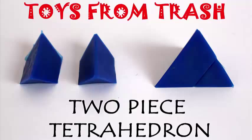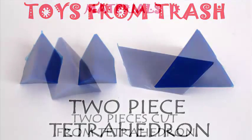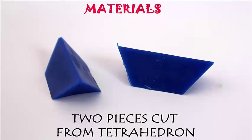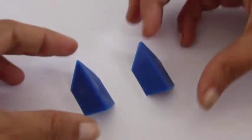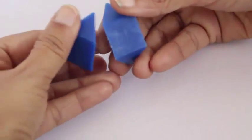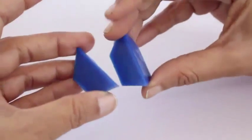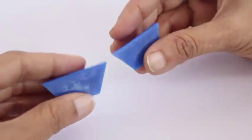This is a very popular puzzle called a two-piece tetrahedron puzzle. Here are two pieces, exactly similar, which can be put together to make a tetrahedron. The two pieces are made from plastic—it's a ready-made puzzle and they look exactly similar.